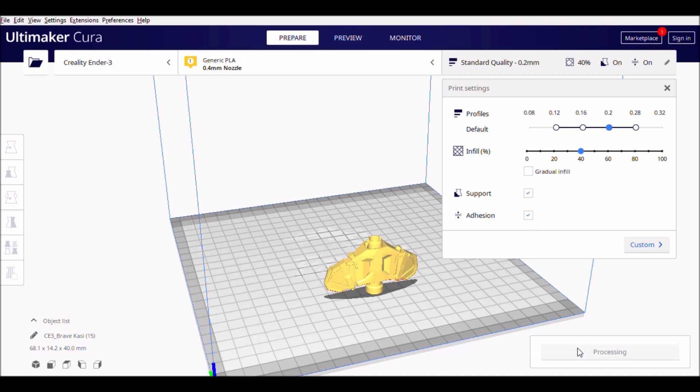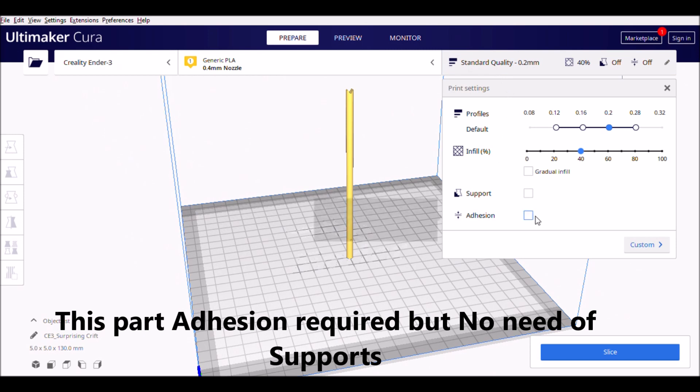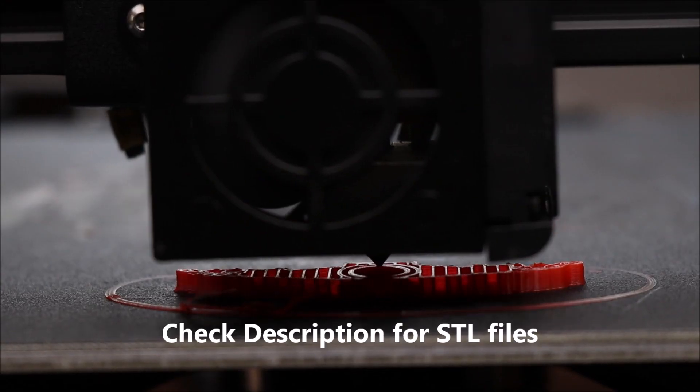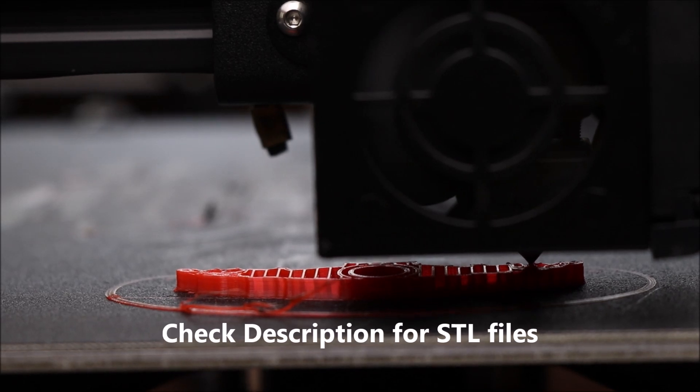It has only two parts. The first part or main body requires supports while printing and the slinger part only needs adhesion. It won't take much time to get the printing work done.